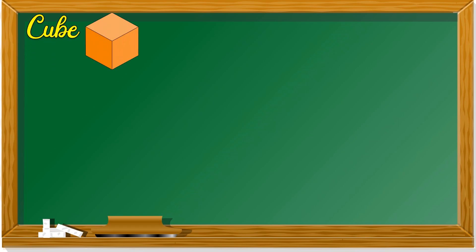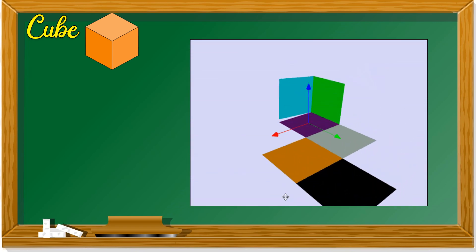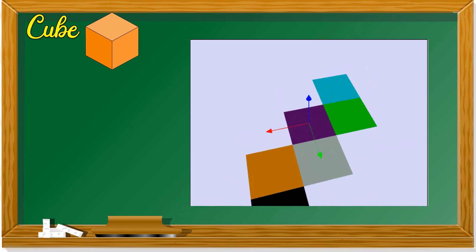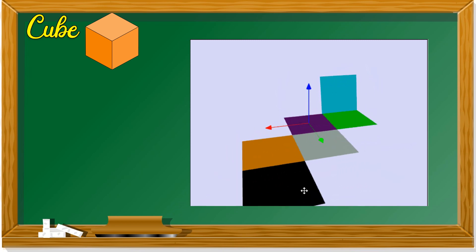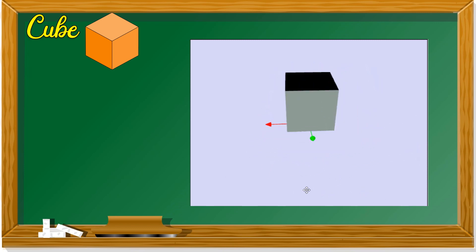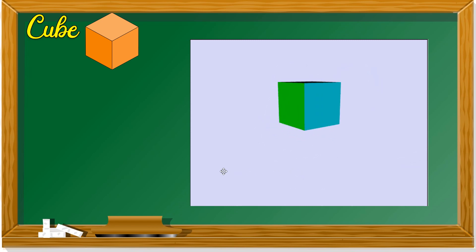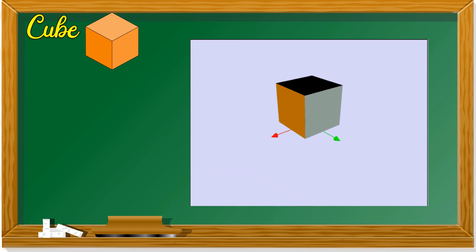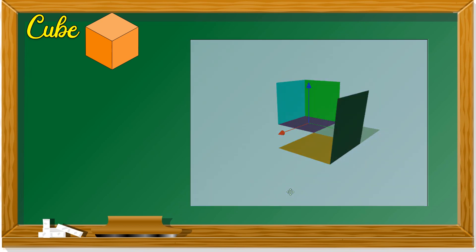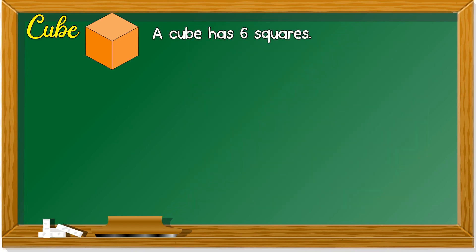The first 3D shape we are going to look at is cube. This is a cube. How many squares does a cube have? Six squares, right? You can see how it's folded back. This is the net of a cube. A net is where when you open it up, you can see the shape and how you fold it. A cube has six squares.